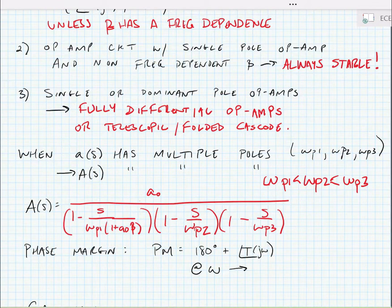And in this case, the op-amp has the potential to be unstable if the poles are too close together, for instance.